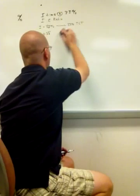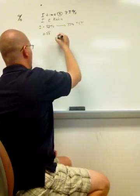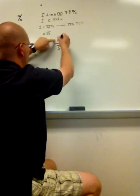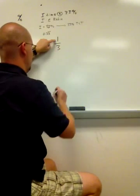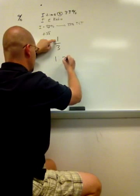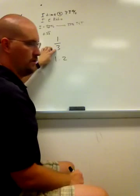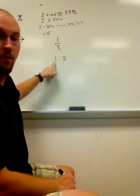One thing you can do is just turn this into a fraction, 1/3. You have 3 parts, I subtract the top from the bottom, and that gives me 1 to 2. So I subtract this 1 from 3, and what's left over is 2, and that gives me an I to E ratio of 1 to 2.